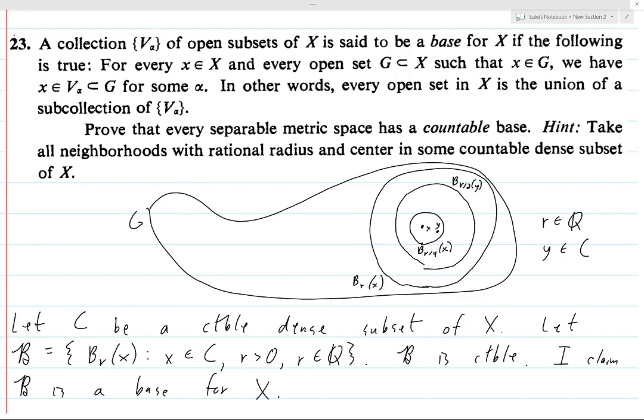So we have an element of this collection B which contains the point x and which is contained in G. That means that the set B satisfies the condition: for every x and for every G containing x, there is some element of the base which contains x and which is in G. That means we have a base, and we already know this set is countable, so we have a countable base. That's the picture argument — it gives us intuition, but pictures can be a little deceiving.